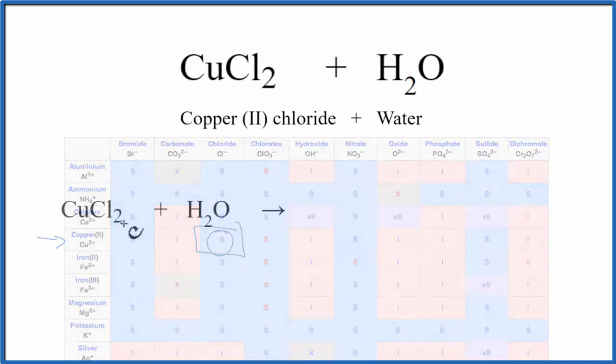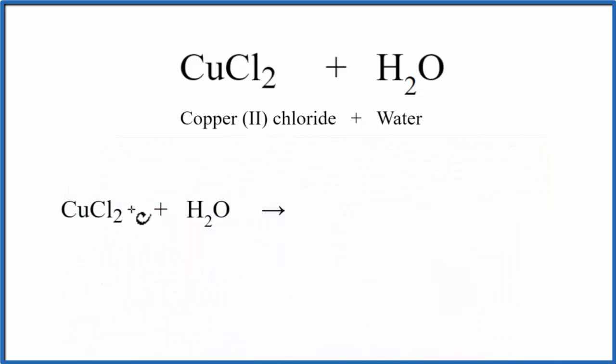Let's write the equation. We have solid copper chloride, let's put a little S down here, and then liquid water. We put the solid copper chloride in the water, it dissolves and breaks apart or dissociates into its ions.